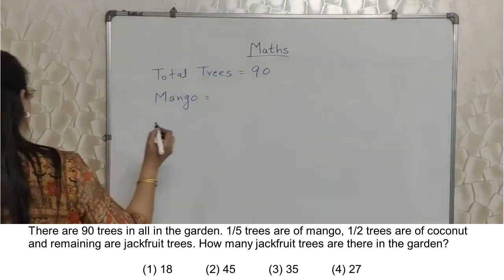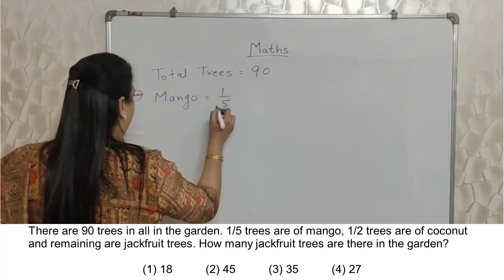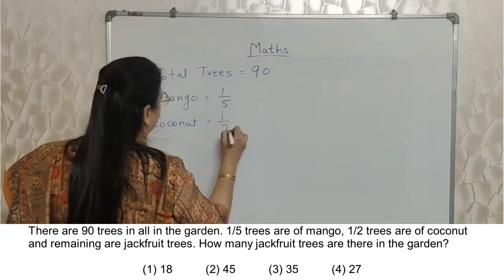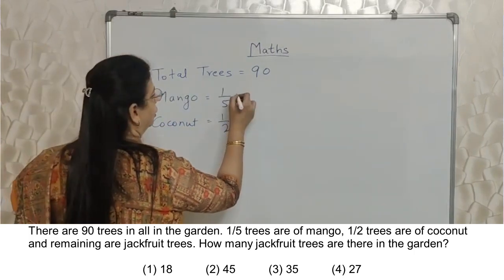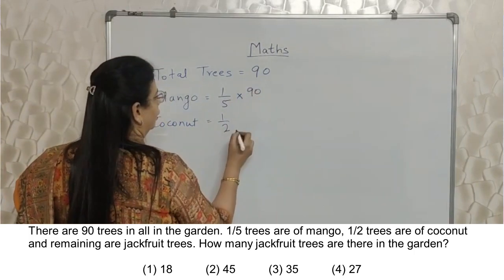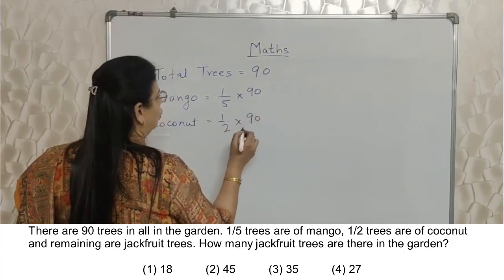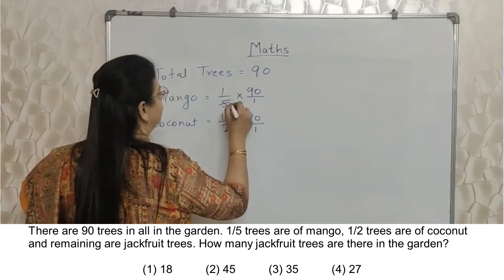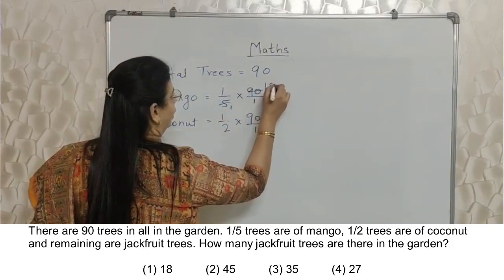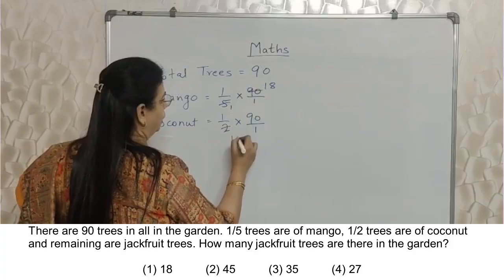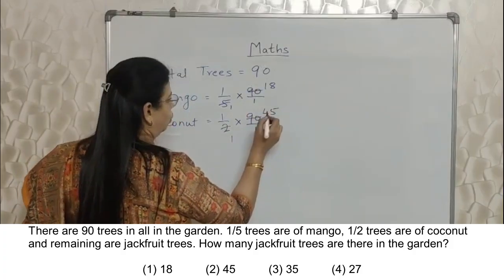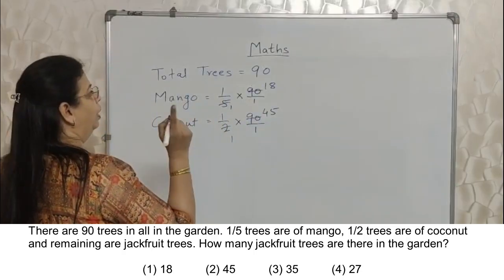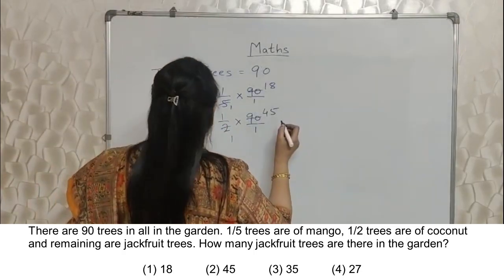Mango trees are 1 upon 5, and coconut 1 upon 2 - both of 90. Let's start. If there's confusion, write 90 upon 1. 5 ones are 5, so 18. 2 ones are 2, so 45. You can take your time. You need to do this fast, but that will happen only with practice.